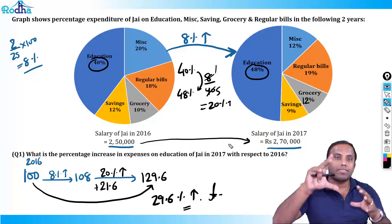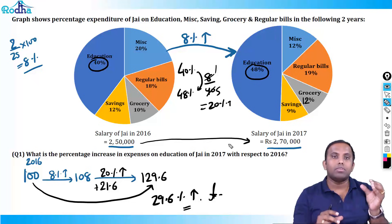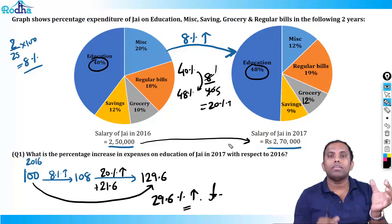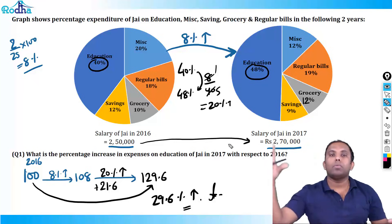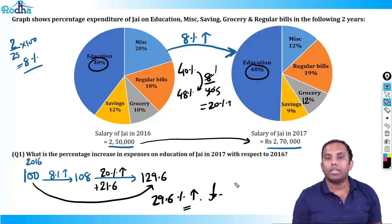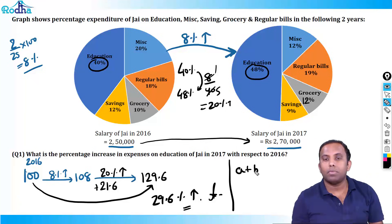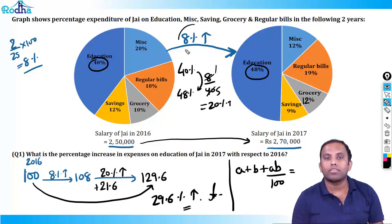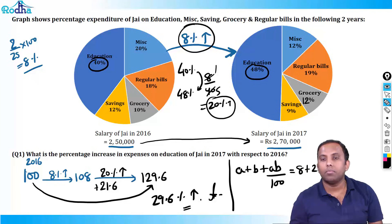So the education sector itself increased from 40% to 48% — a 20% increase. And the pie chart enlarged by 8%. Applying the successive change formula A + B + AB/100: 8 + 20 + (20 × 8)/100 = 28 + 1.6 = 29.6. That's the answer.